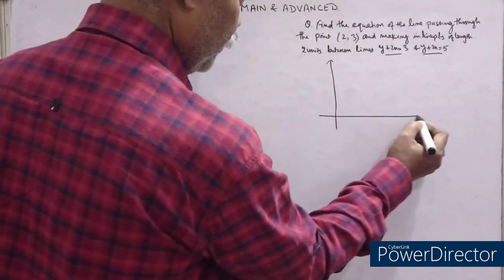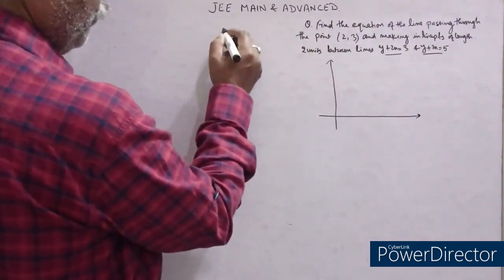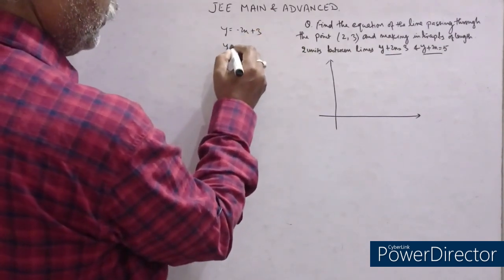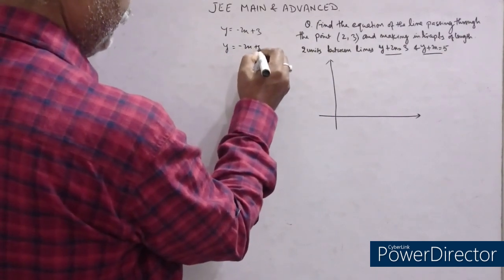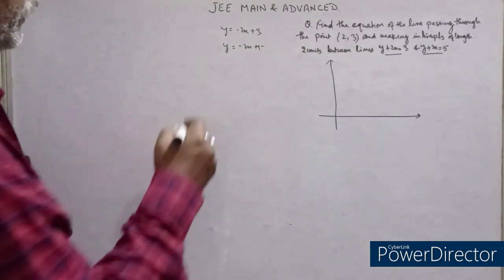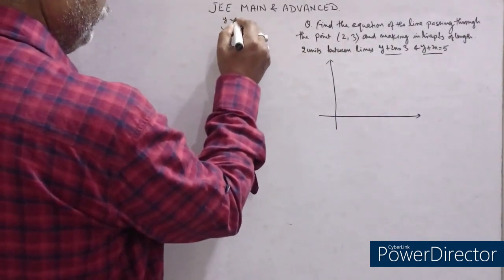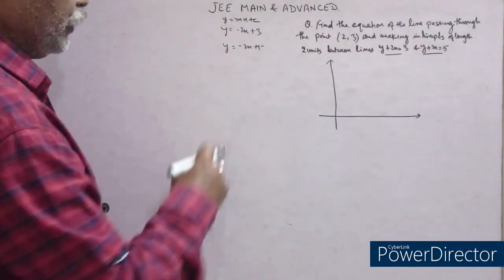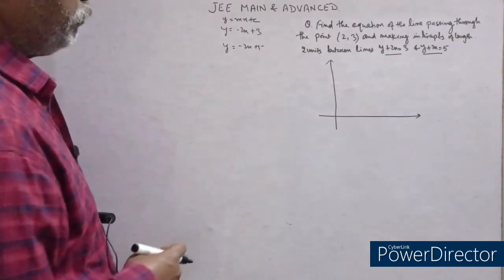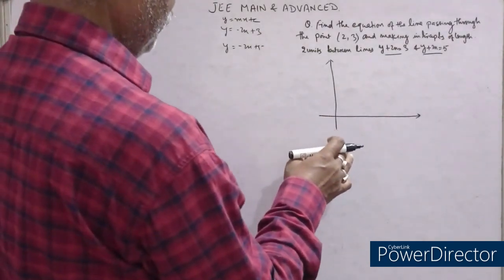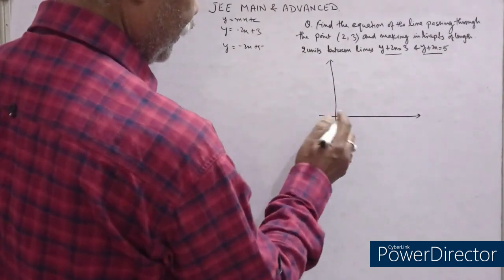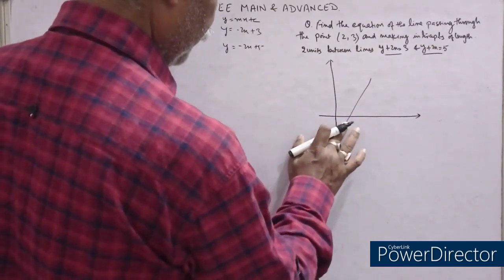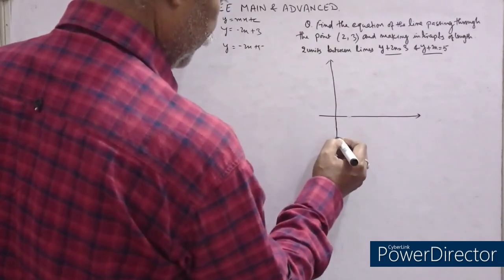Let me draw the graph. Here you see this is y = -2x + 3 and this is y = -2x + 5. I have converted these into slope-intercept form, that is y = mx + c. Because the slopes are equal, they are parallel. The graph will be like this — the angle will be obtuse because the slope is -2.